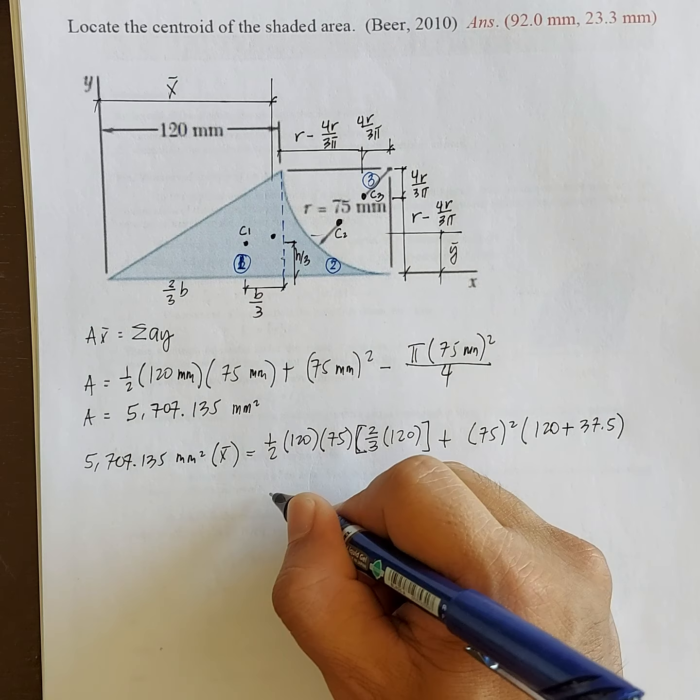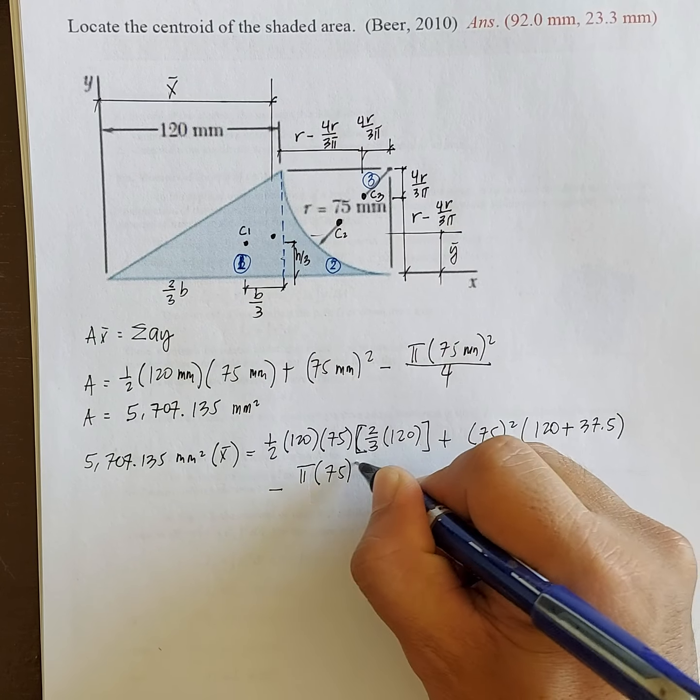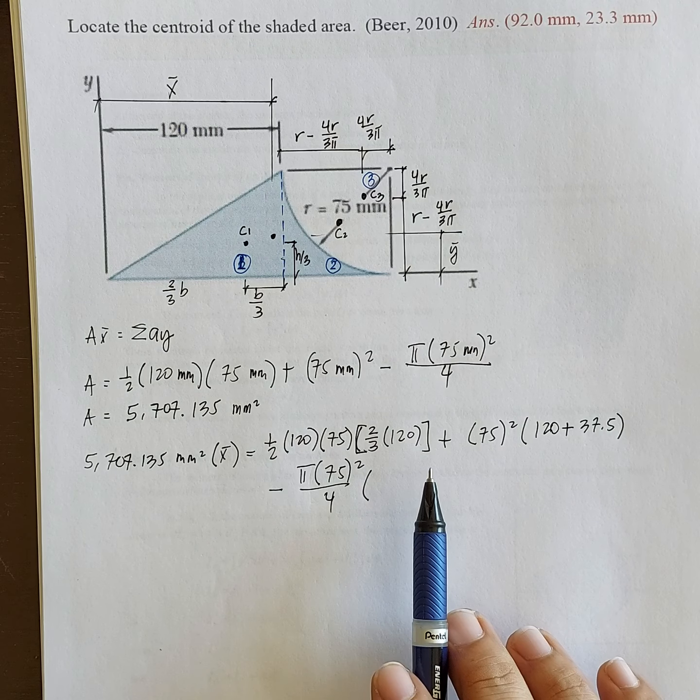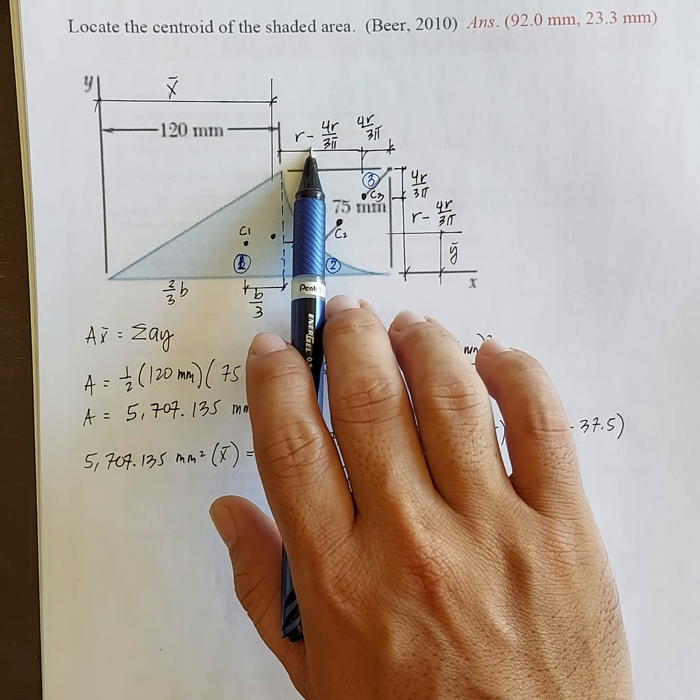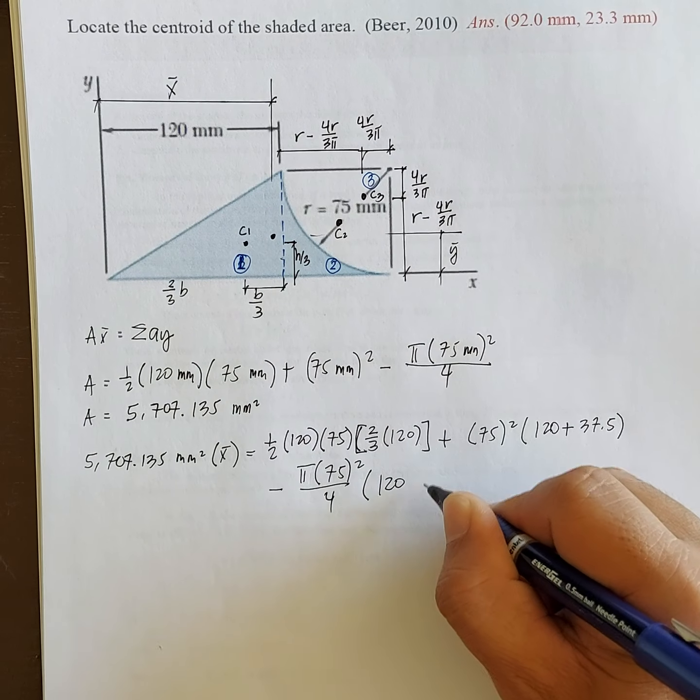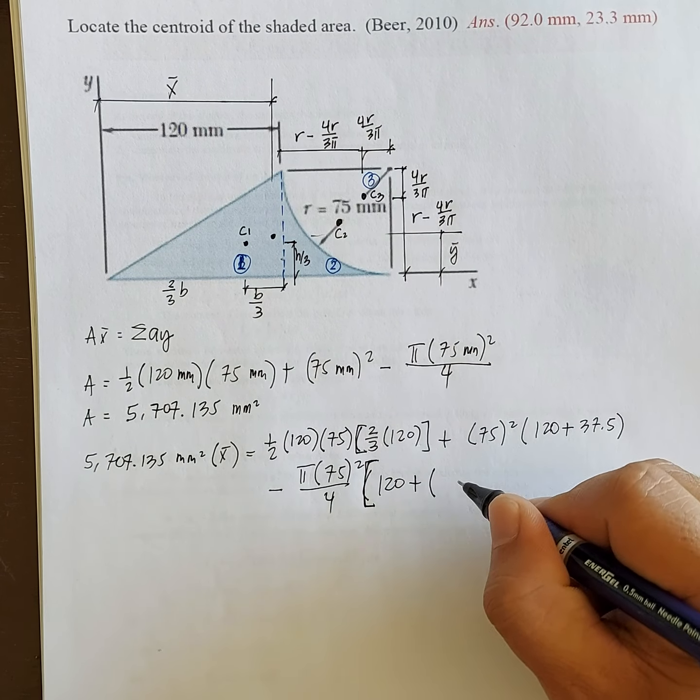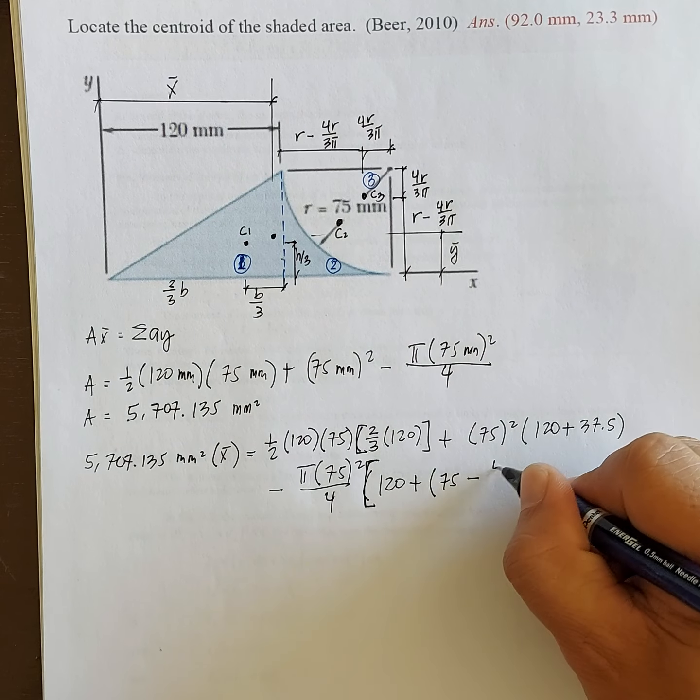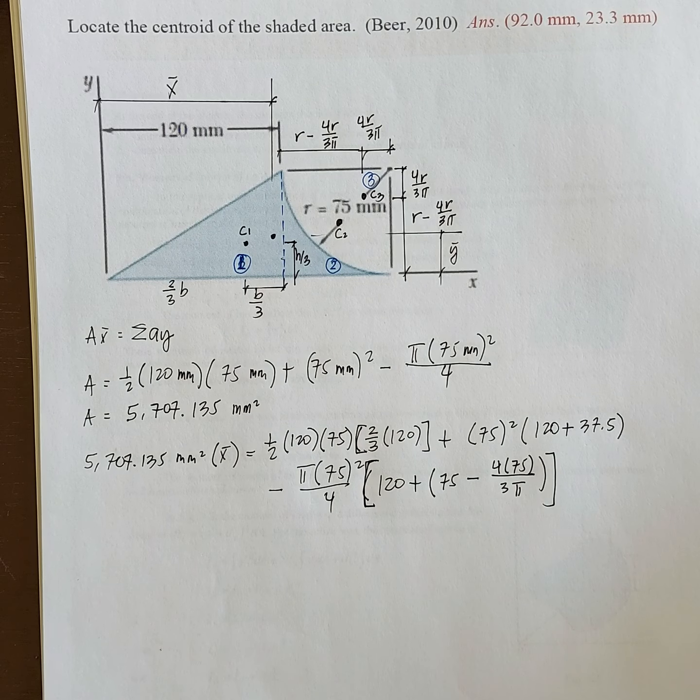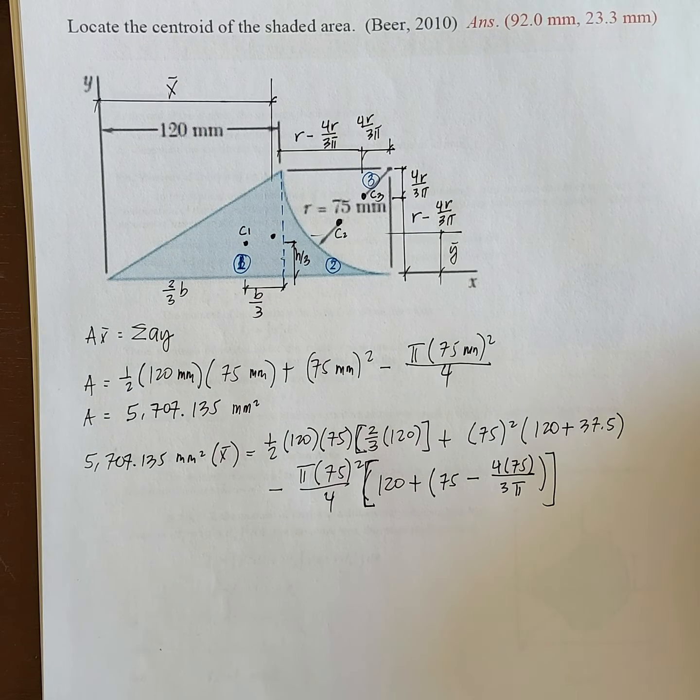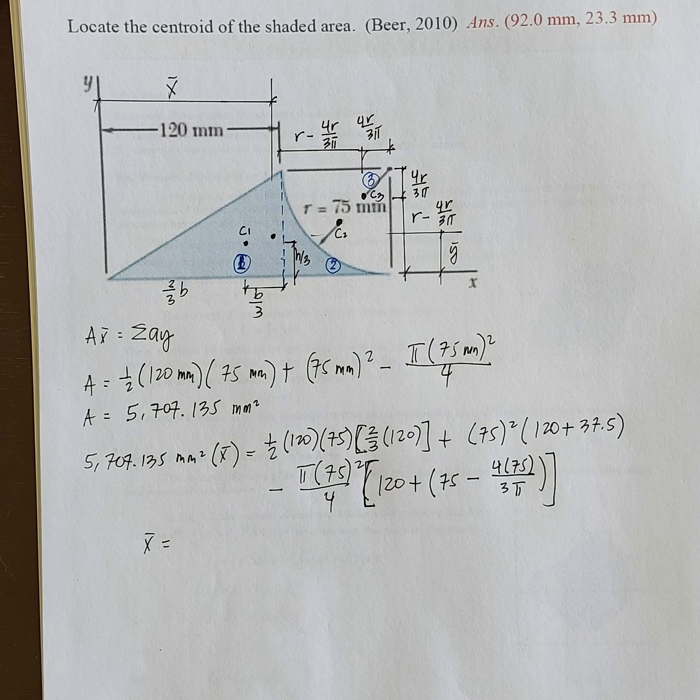And then minus the quarter circle. Quarter circle. Area of the quarter circle is pi 75 squared over 4. Now, the moment arm of the quarter circle, centroid of the quarter circle to Y axis. So this is 120 plus R minus 4R over 3 pi. So 120, let's use bracket, plus R which is 75 minus 4R over 3 pi, 4 times 75 over 3 pi. Now we have x-bar left in the equation as unknown. So what is the value of x-bar?